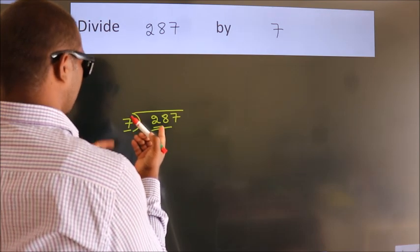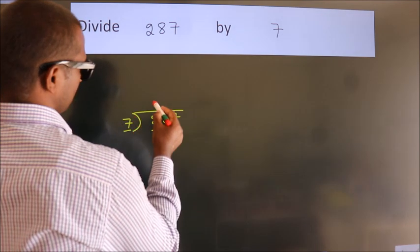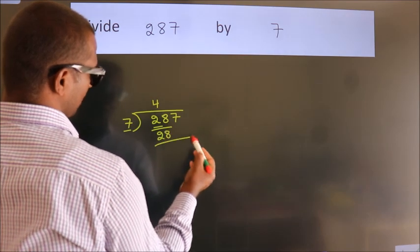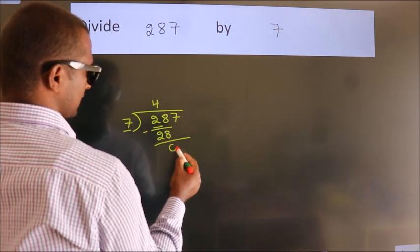When do we get 28? In the 7 table. 7 fours, 28. Now we should subtract. We get 0.